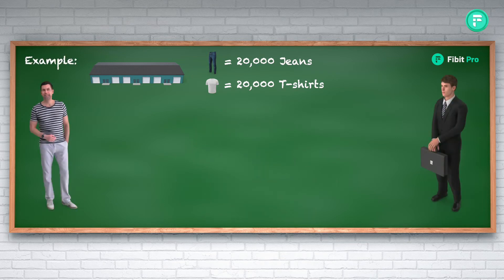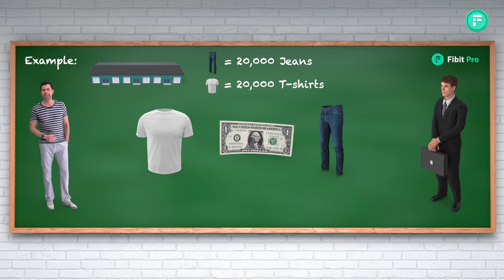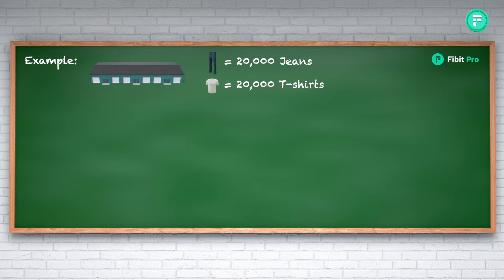The businessman says that because he priced both items at one dollar, there is a perfect 50/50 ratio of t-shirts to jeans. When you start trading, one of these may become more valuable and price above a dollar. Currently there are 20,000 jeans and 20,000 t-shirts in the godown, which equals 400 million.